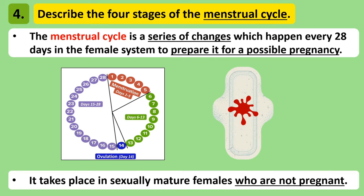The menstrual cycle describes a number of changes which happen every 28 days in the female system to prepare it for a possible pregnancy. The menstrual cycle only happens in females who've reached puberty and are not pregnant. The figures given here are generalisations — for example, on average the cycle lasts 28 days but in some females it could be longer, shorter or completely irregular.